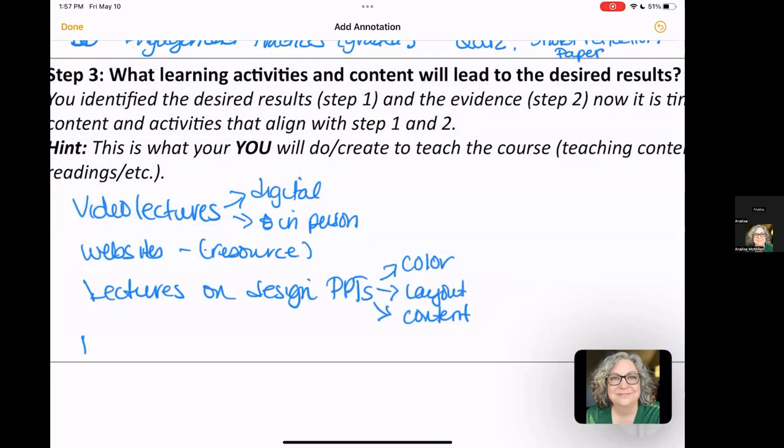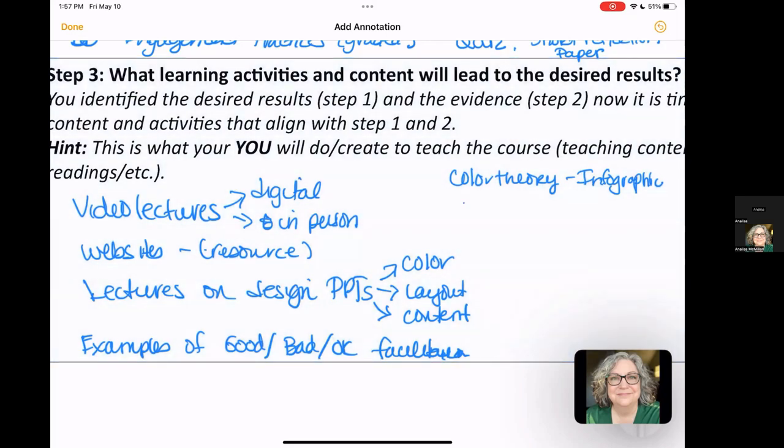I might show examples of good and bad facilitation. Maybe even okay facilitation. I know that I also have some websites that talk about color theory. But I think what I'm going to do instead on that is I would love to make an infographic and give an infographic on color theory. I have some websites on color blindness so people can see what it is to be color blind and how color really doesn't. I think that might be it for now.